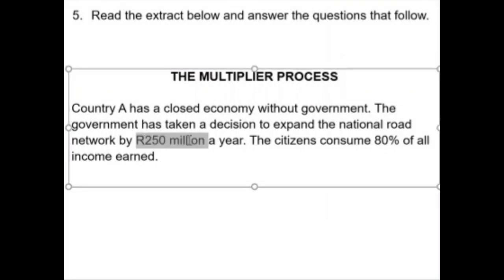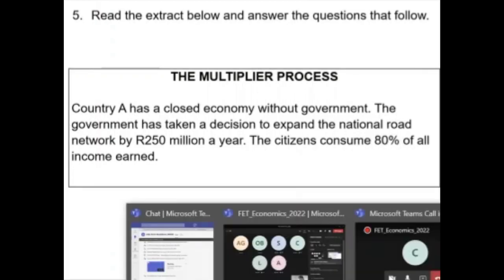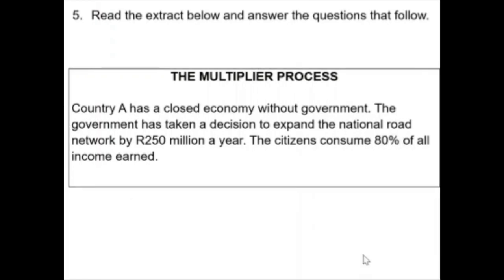They say the government has taken a decision to expand the national road network by 250 million rand a year. The citizens consume 80 percent, meaning they spend 80 percent of all their income earned.